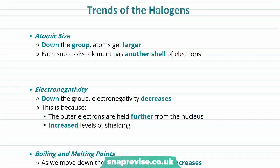The first trend is that there's an increase in atomic size as we move down the group. This is because each successive element down the group has another shell of electrons. In adding a shell of electrons we increase the level of shielding, so the outermost electrons are held less tightly and experience a lesser force of attraction to the nucleus, allowing for this increased atomic size.